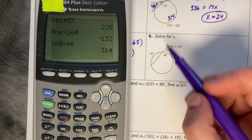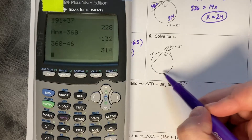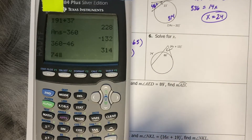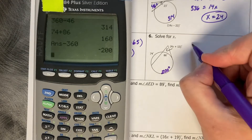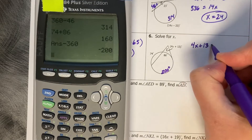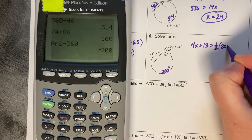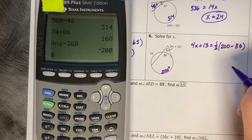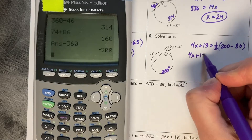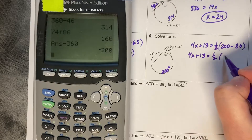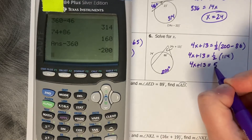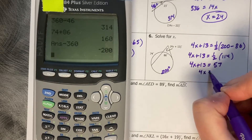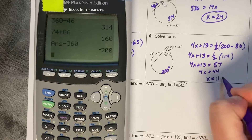Similar scenario here. We have arcs of 74 and 86, so we need the remaining piece of 360. So 360 minus 74 minus 86 gives 200 degrees. So then we have 4x plus 13 equals one half of 8x minus 86. That gives 4x plus 13 equals half of 114, which is 57. So 4x equals 44, and x equals 11.